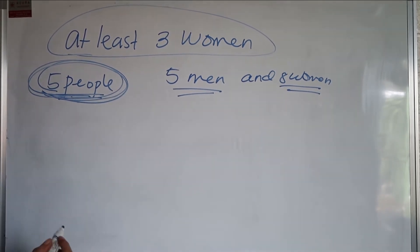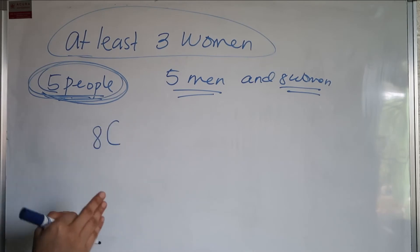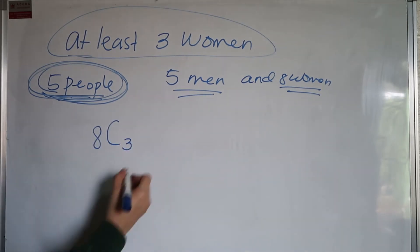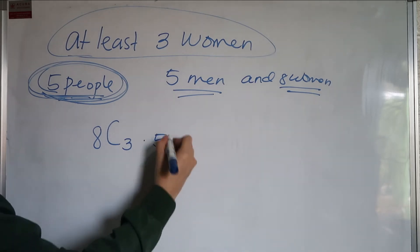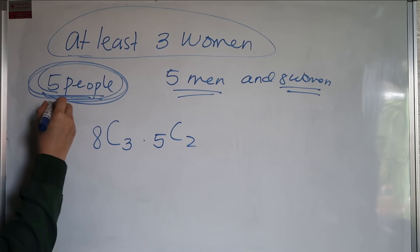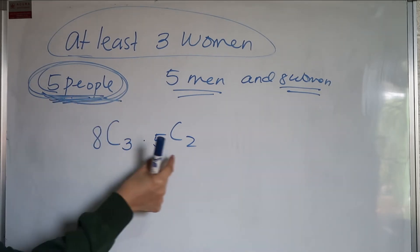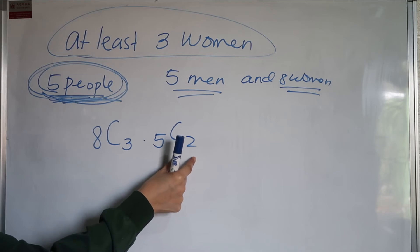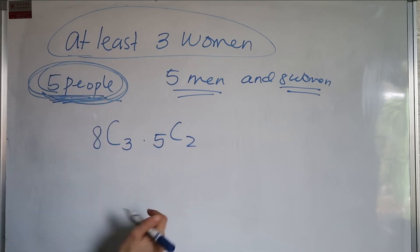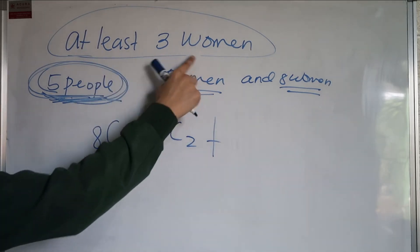So how do we answer that? From eight women, we take three, multiplied by C(5,2). Why two? Because we need to select only five people total. If we already have three women, we need two men to complete the committee of five. Plus, at least three means the minimum is three.